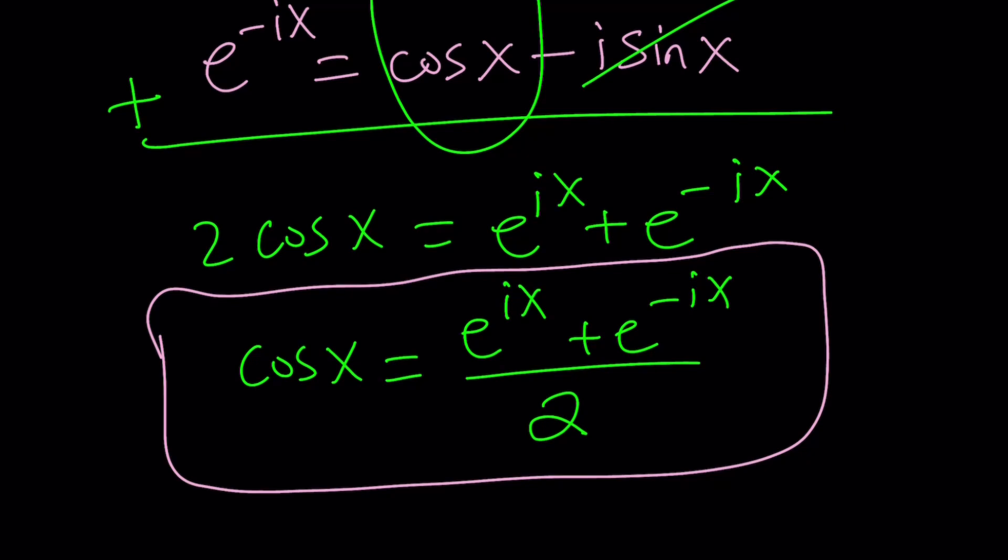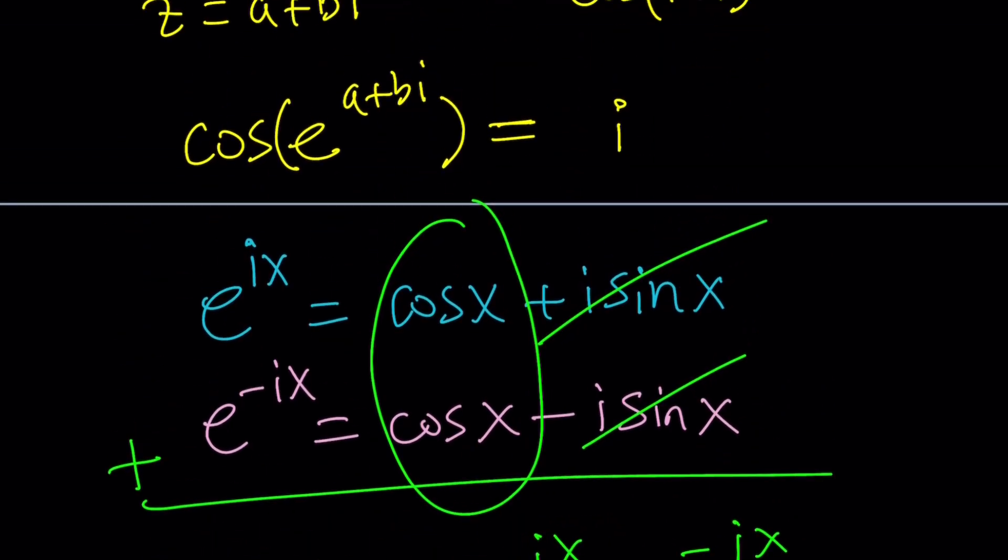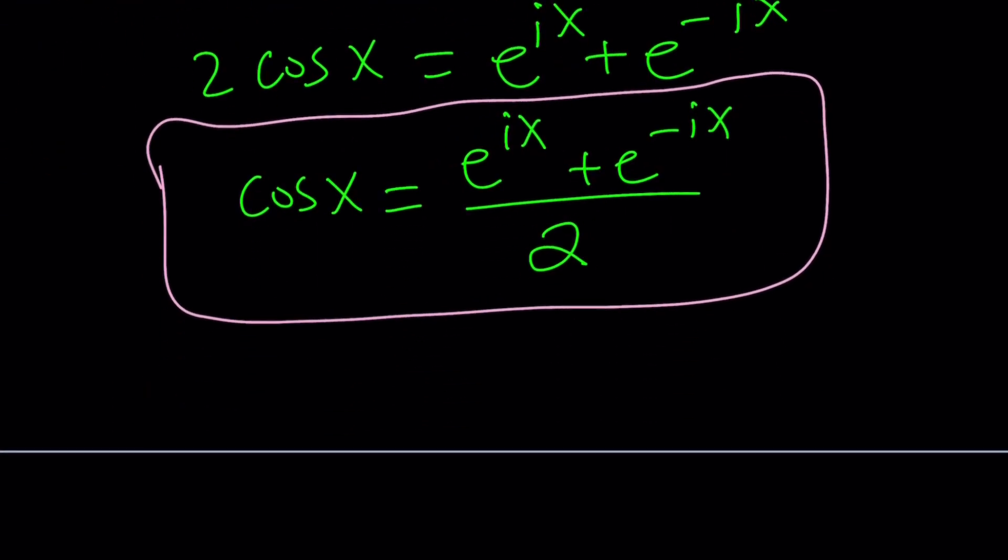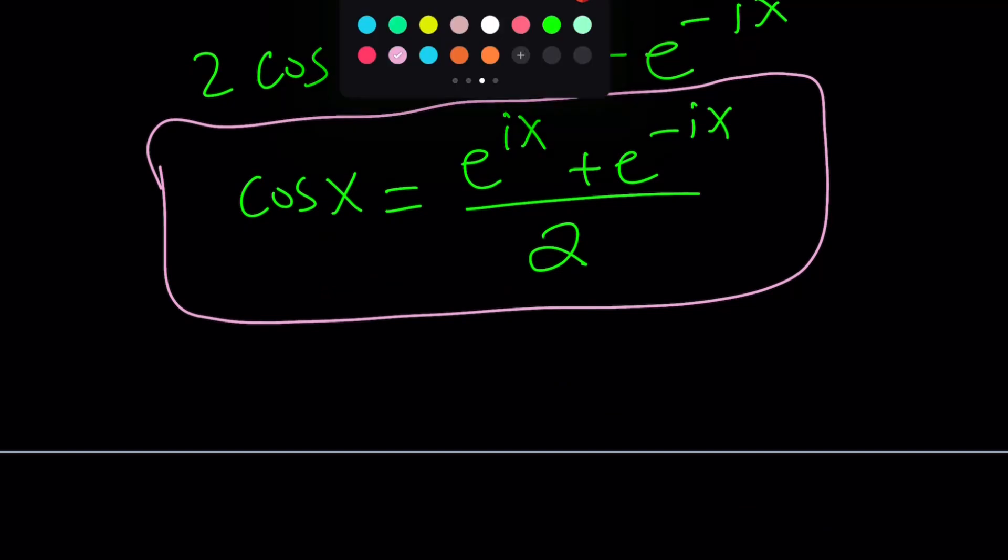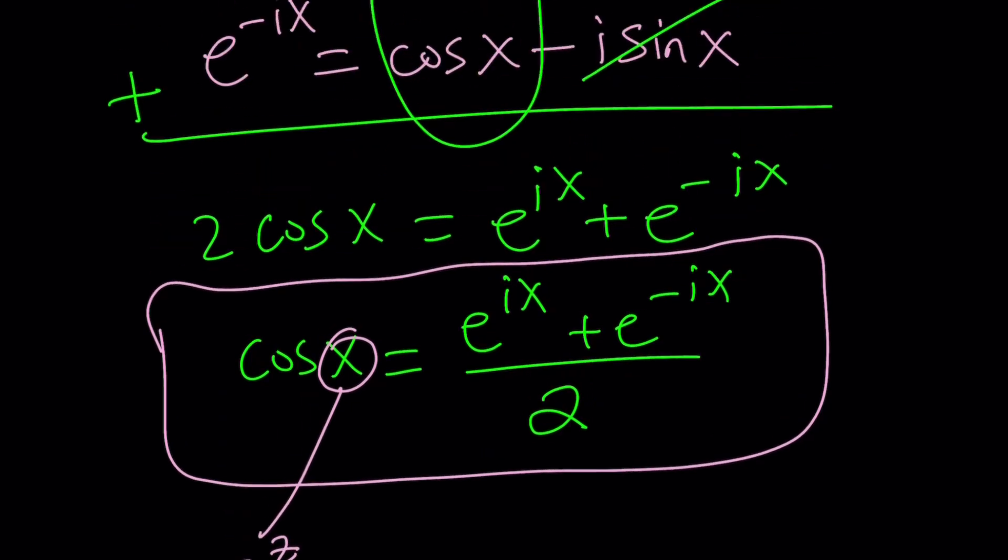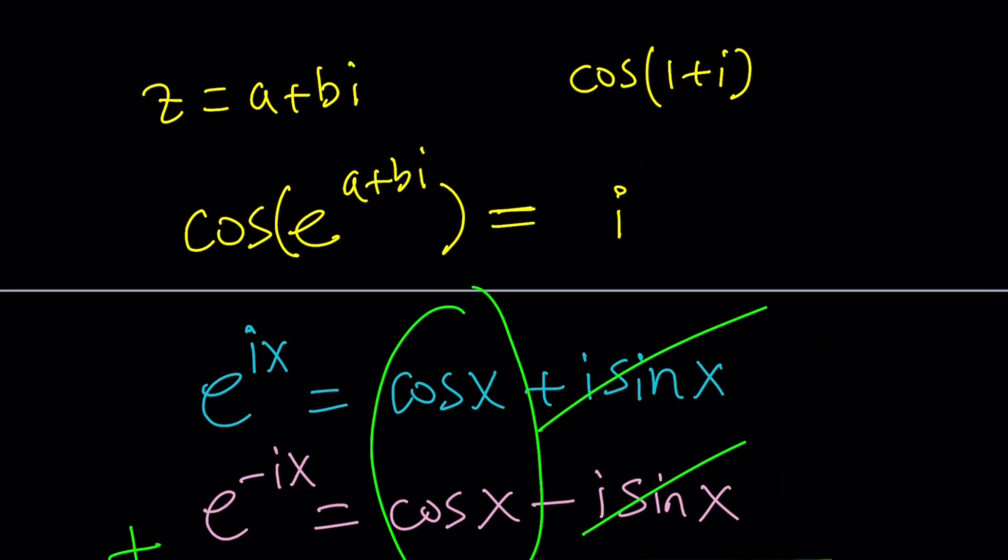Anyways, so this is cosine x and what do we want? We want cosine of e to the power z. Wow, we're going to take it to an exponential level. So what we need to do is just replace x with e to the power z and that's all we have to do. And then set it equal to something. What are we going to set it equal to? I.